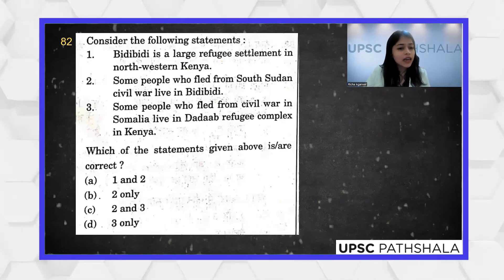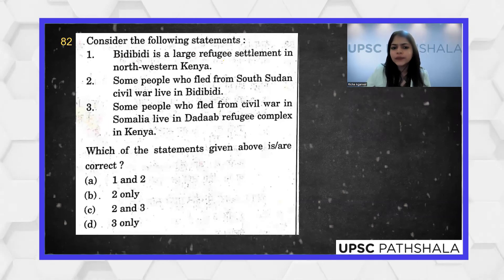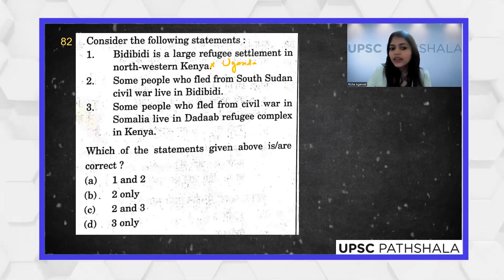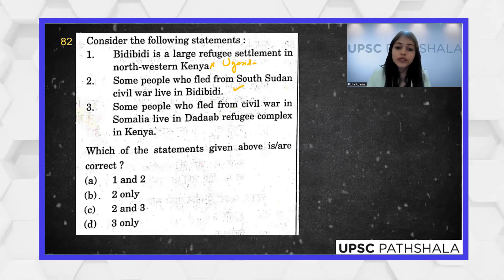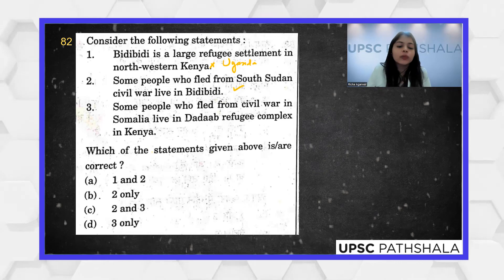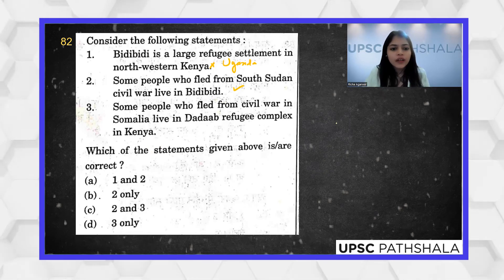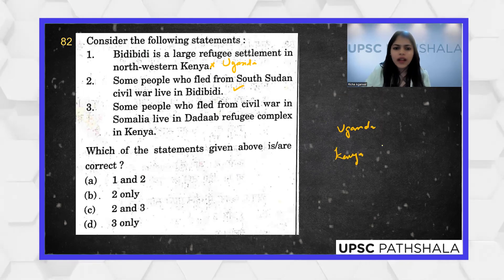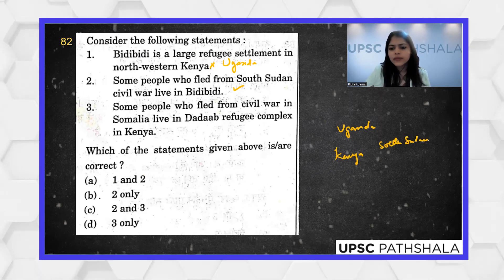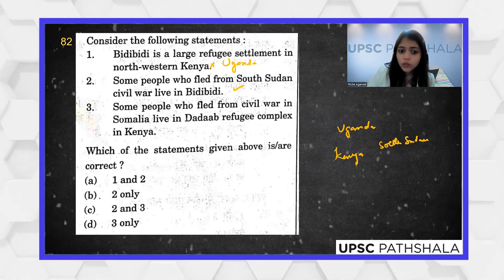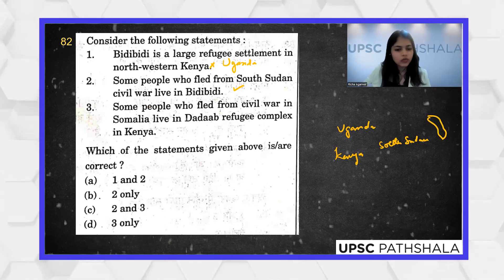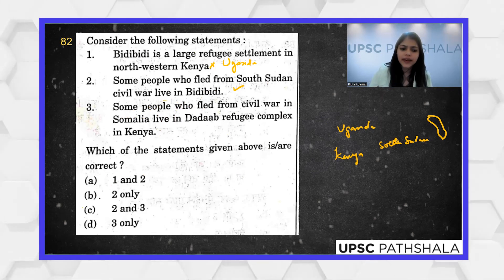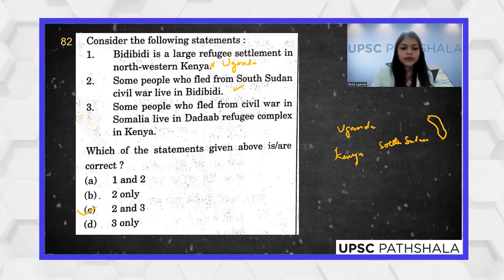Bidibidi is described as a large refugee settlement in northwestern Kenya — this is incorrect. Bidibidi is the largest refugee settlement in the world and it is in Uganda, not Kenya. Some people who fled from the South Sudan civil war do live in Bidibidi. People who fled from Somalia go to the Dadaab camp in Kenya. Statements two and three seem correct while statement one is false, making C the correct answer.